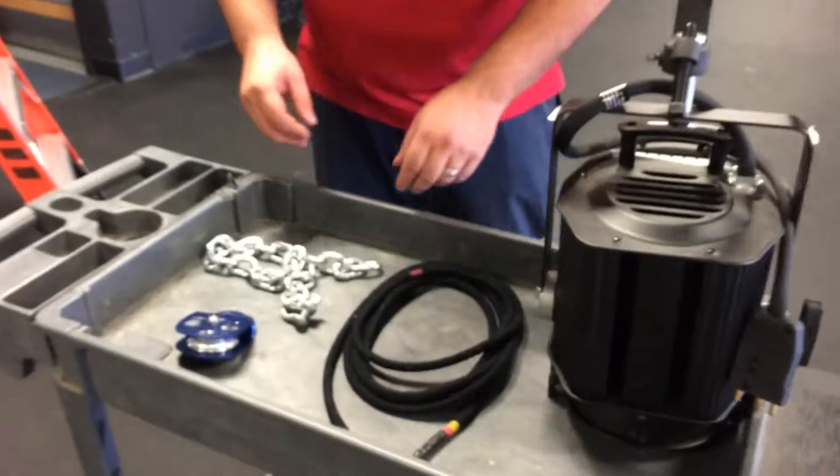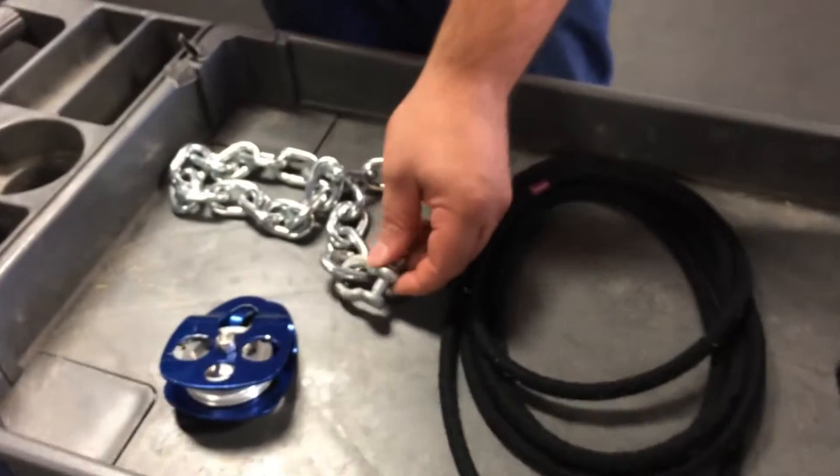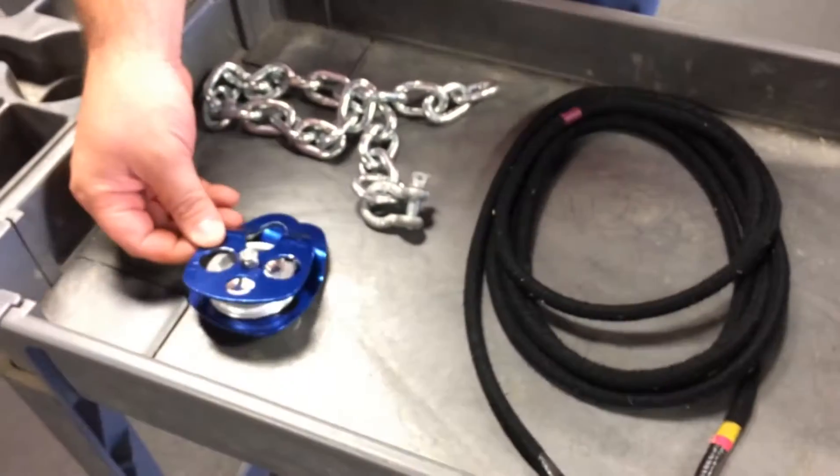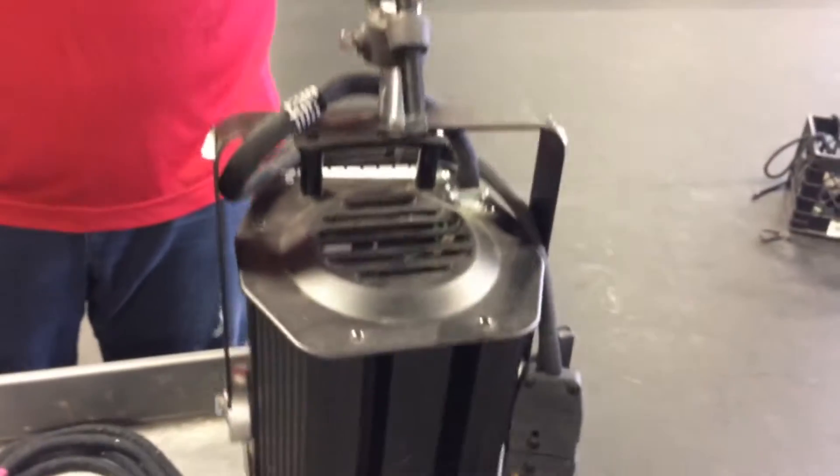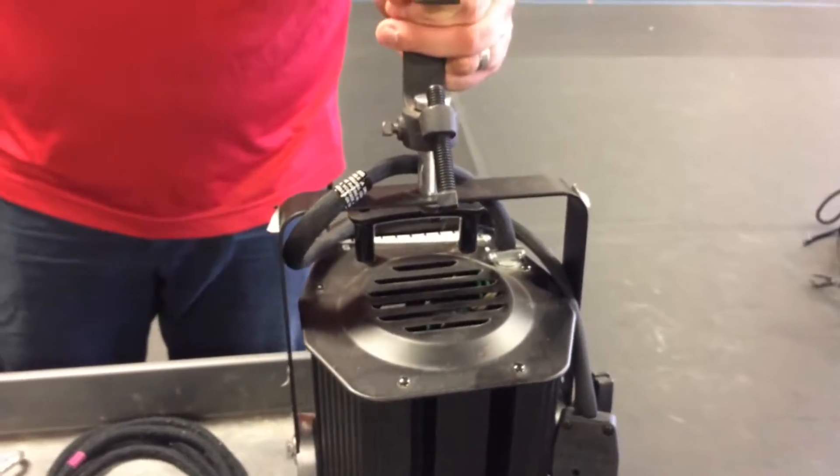We're going to go over the materials used in this competition. We have our chain with our shackle, our pulley, our rope, and our lighting instrument, which we will be picking up with our knot.